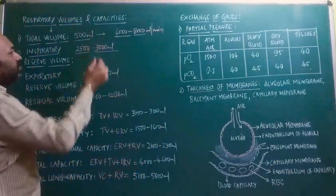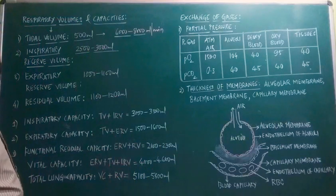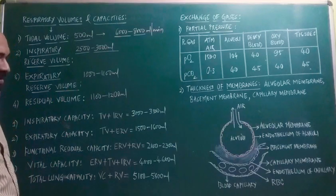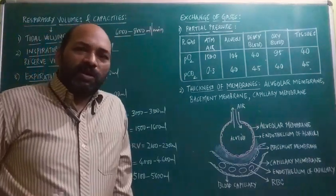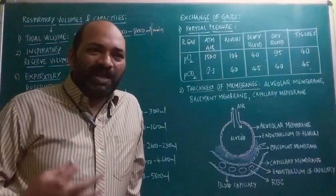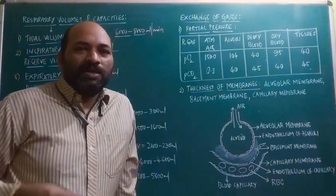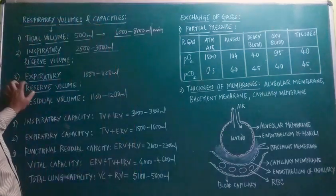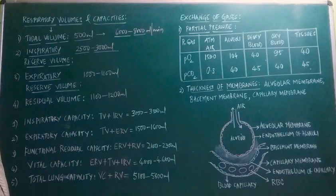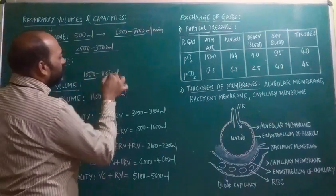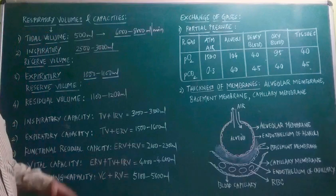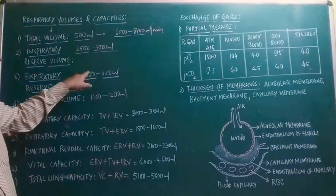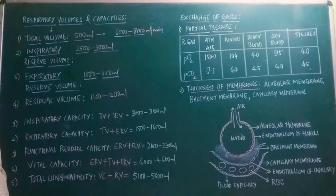Next is expiratory reserve volume — the additional volume of air a person can expire or exhale after a forcible expiration. That is the expiratory reserve volume, which is around 1,000 to 1,100 ml. When we try to exhale forcibly, the additional volume which comes out is 1,000 to 1,100 ml.